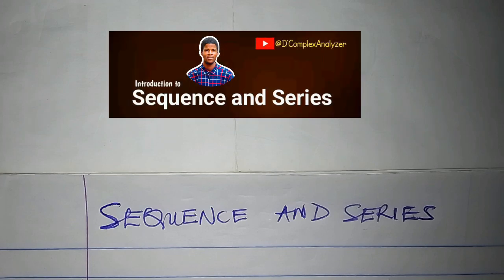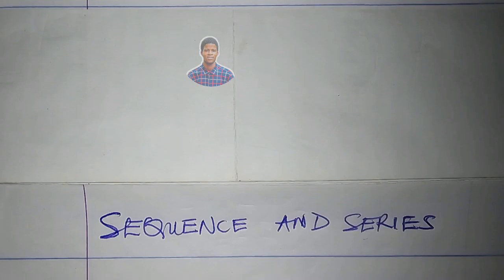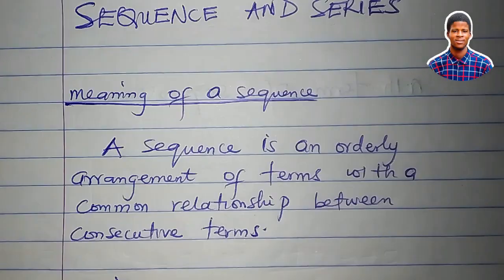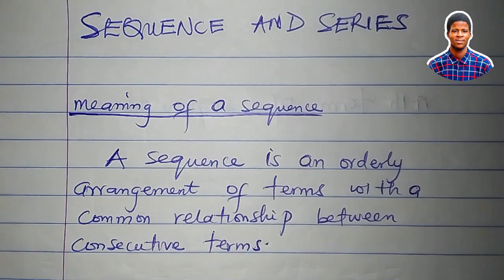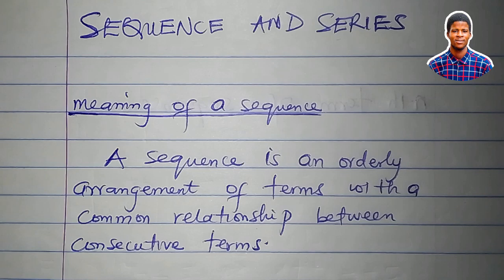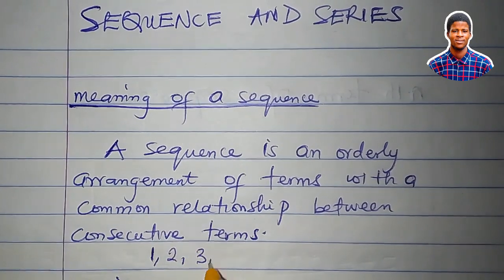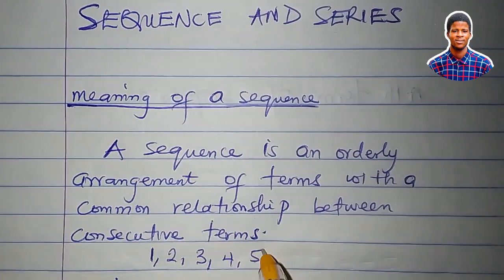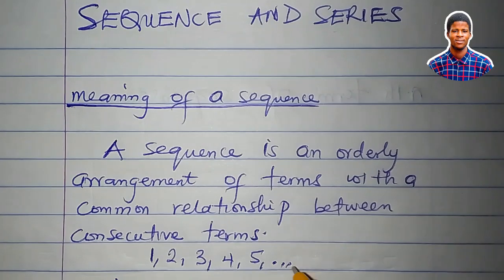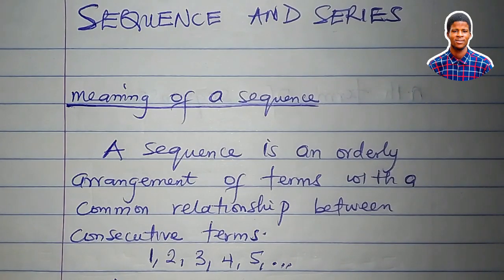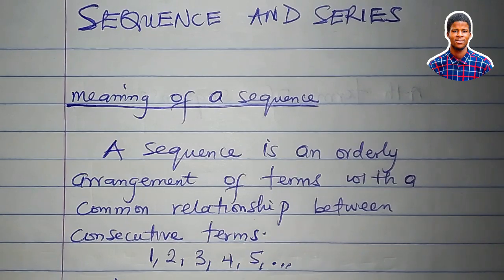In this tutorial, we'll talk about sequence and series. We'll start by defining a sequence. A sequence is an orderly arrangement of terms with a common relationship between consecutive terms. It's a sequence. Each member of the sequence is called a term.